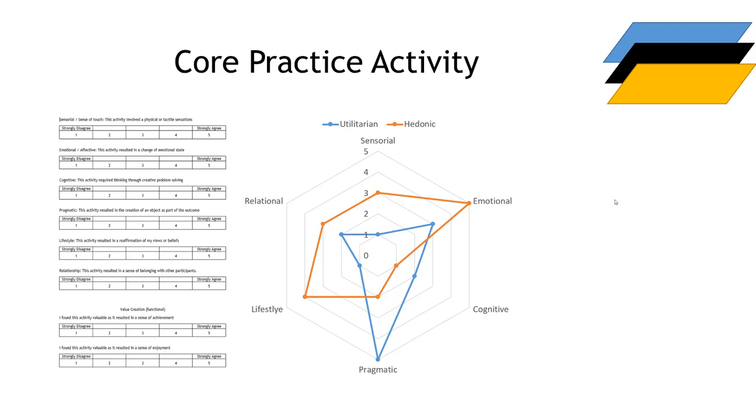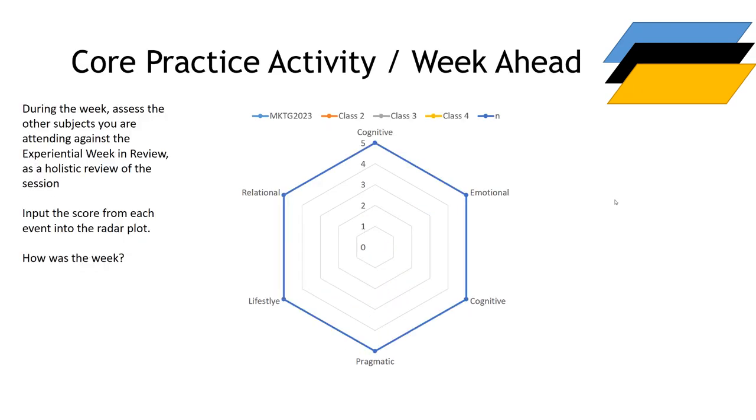These are aspects that can be valued in a service environment: sensorial, emotional, cognitive, pragmatic, lifestyle, and relational. What I'm going to ask you to do is observe the other courses you're involved in during the week, then self-evaluate, self-score, and get a radar map of where you're at with these courses. That's the week ahead, that's the practice.